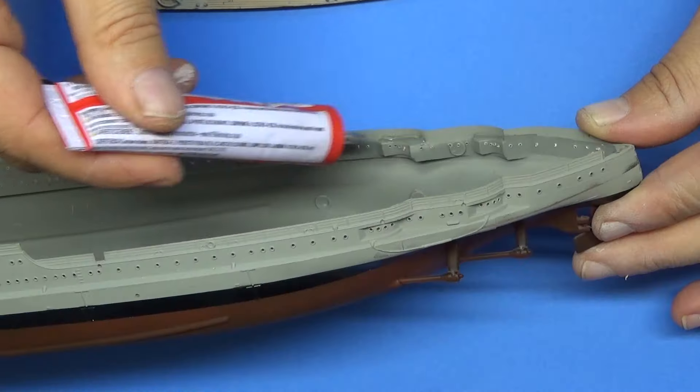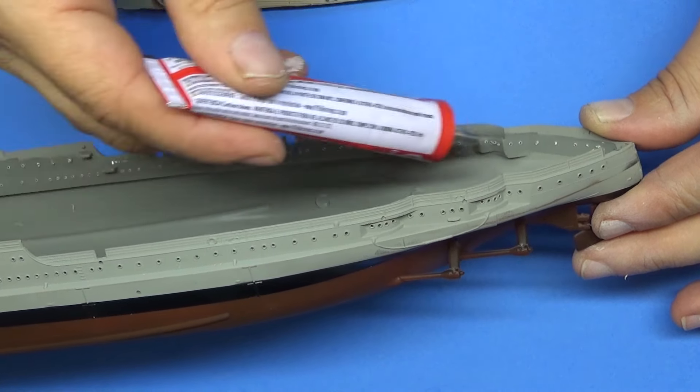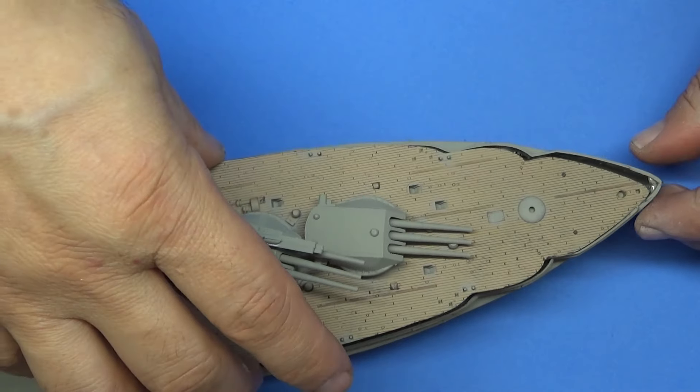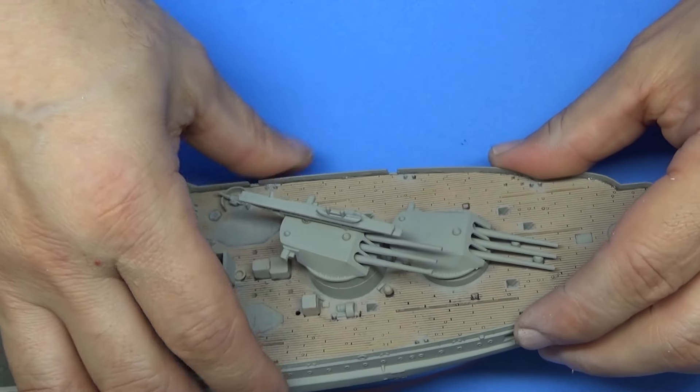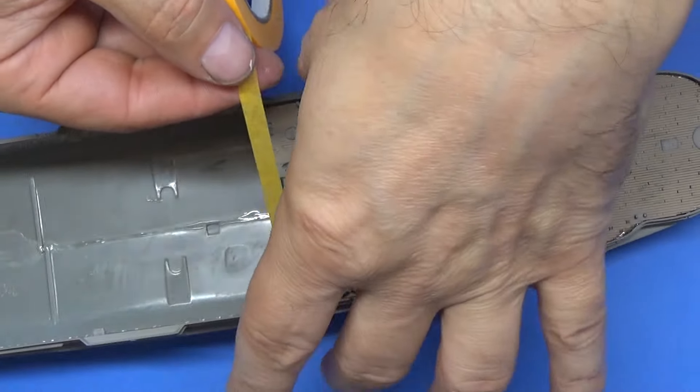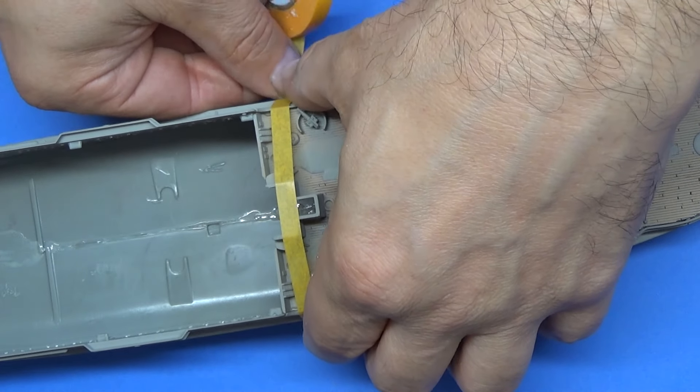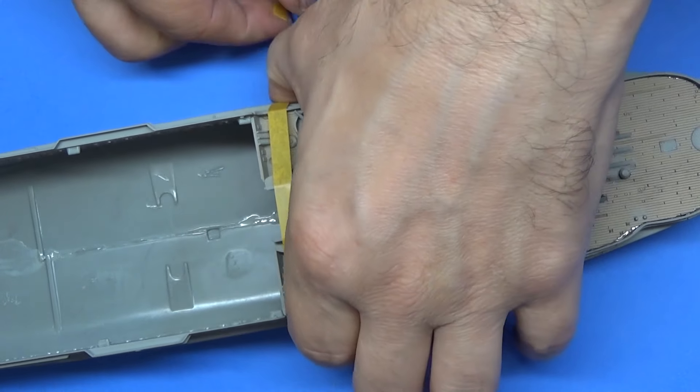But I'm using the tube glue because it's extra strong. I wasn't worried about thin cement that they have, the extra thin. I just wanted this to be secure. Best way to do that is with tube glue because that stuff sticks really well. So this is what we're doing here.